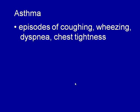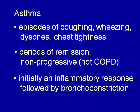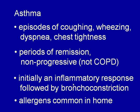Asthma is characterized by episodes of coughing, wheezing, chest tightness, and difficulty breathing, with periods of remission. It is a non-progressive disease, which is why it is not classified as COPD. Typically an inflammatory response triggers strong bronchoconstriction that closes down the bronchial tubes. Common triggers include household allergens like dust, dust mites, and mold.